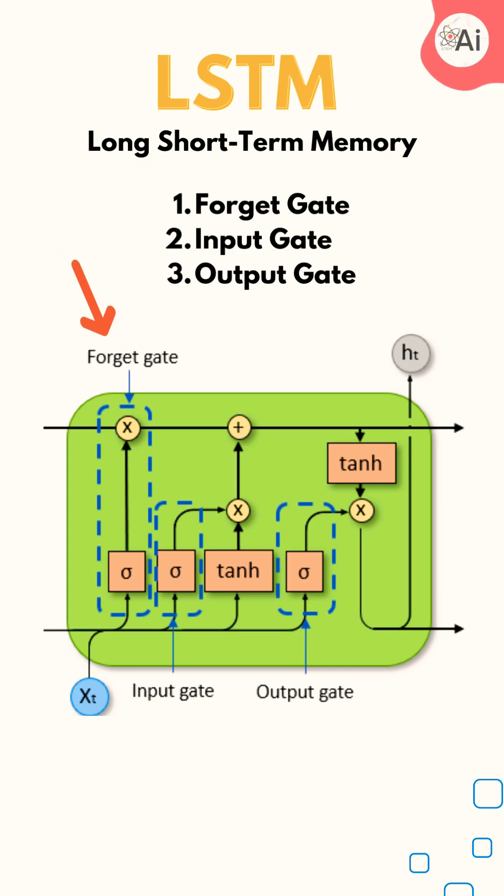The forget gate decides which information from the previous cell state should be discarded or remembered. The sigmoid activation function squashes the values between 0 and 1, where 0 means completely forget and 1 means completely remember.